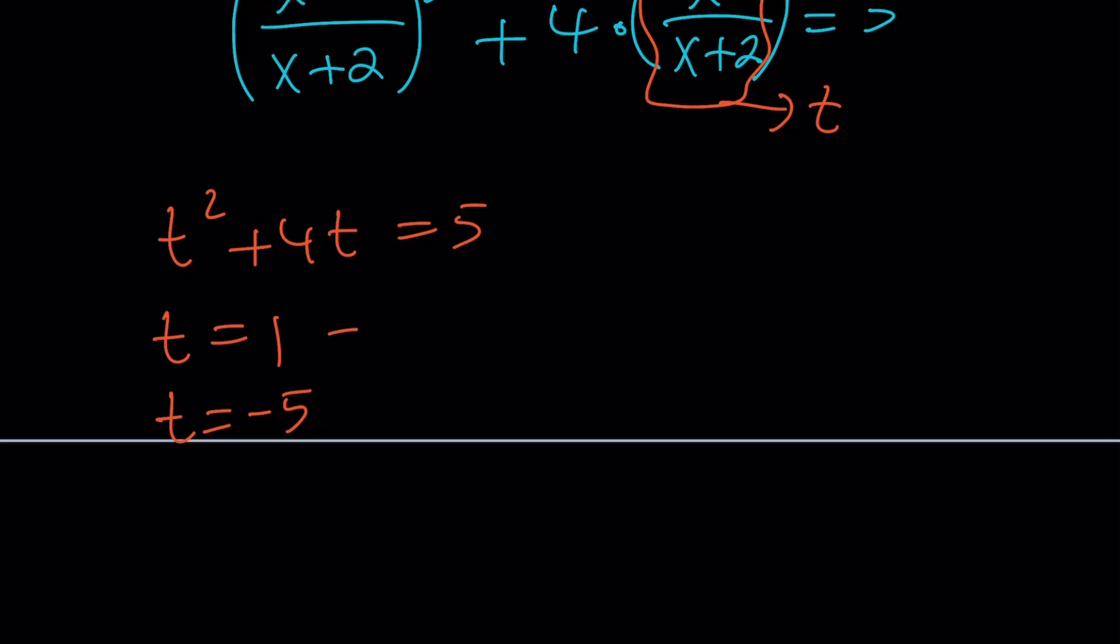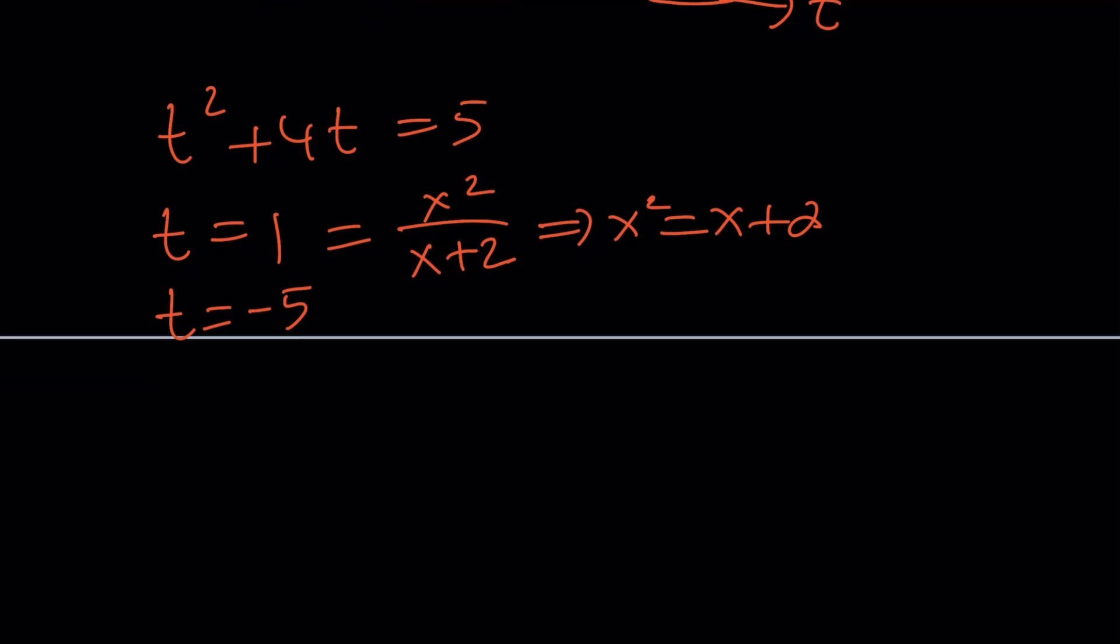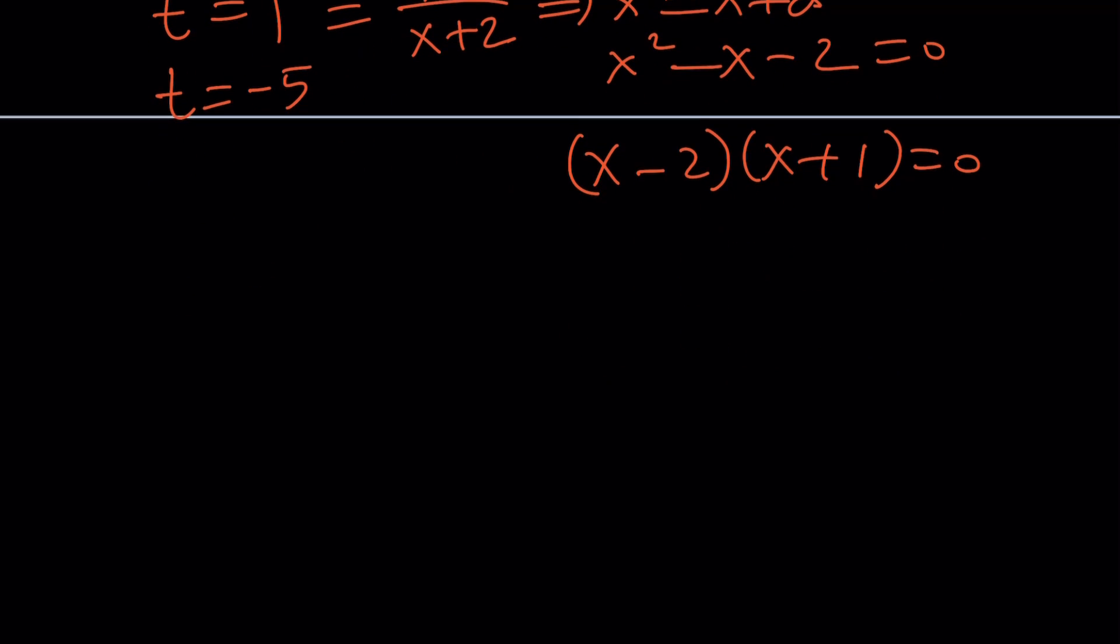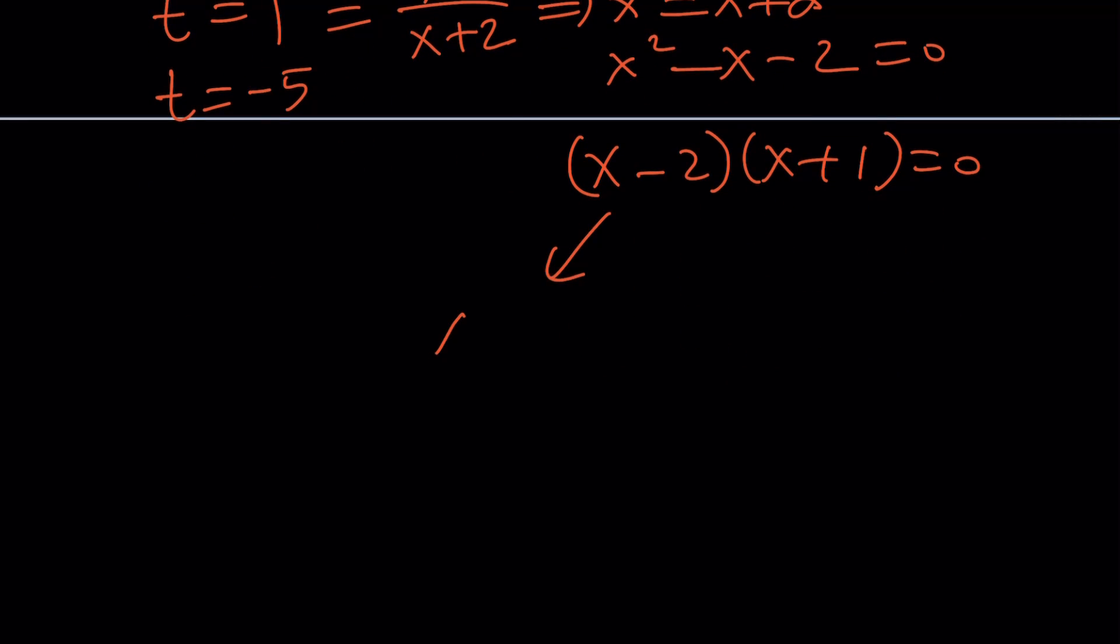Let's go ahead and set each one equal to t, which is x²/(x+2). From here, we get x² = x + 2 from this equation. And then by putting everything on the same side and factoring, we get (x-2)(x+1) = 0. And then we're going to find x = 2 and x = -1 from here.